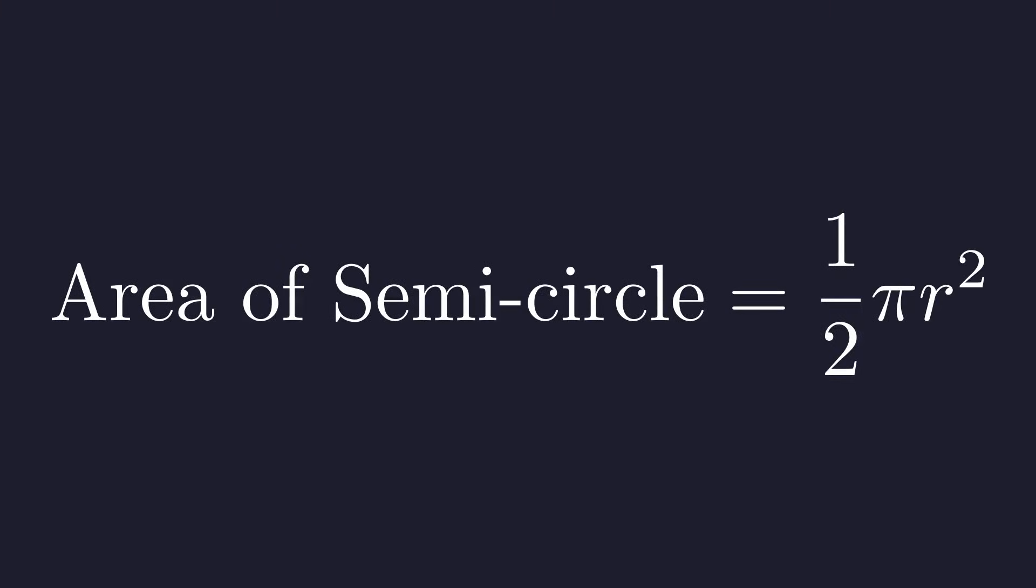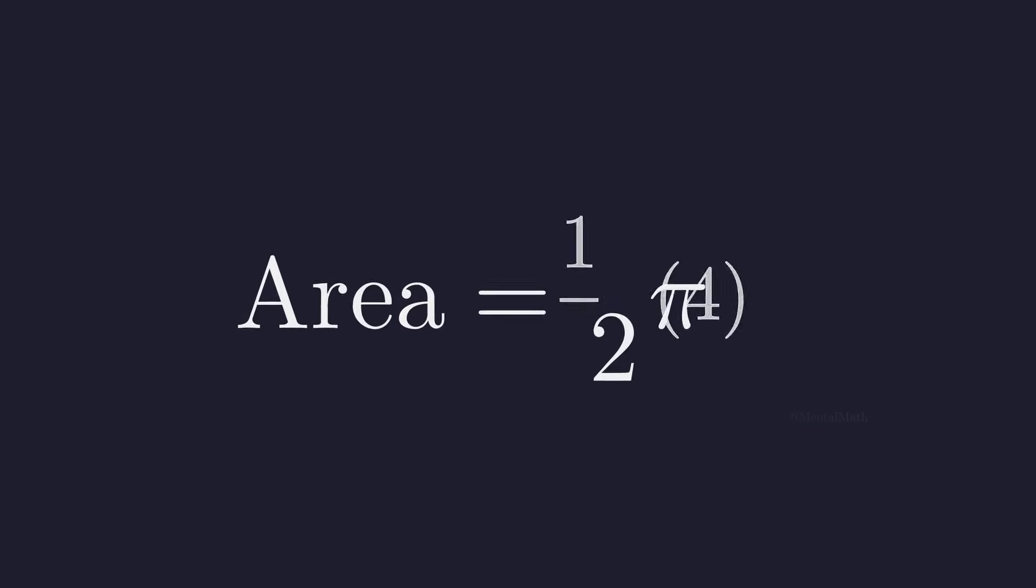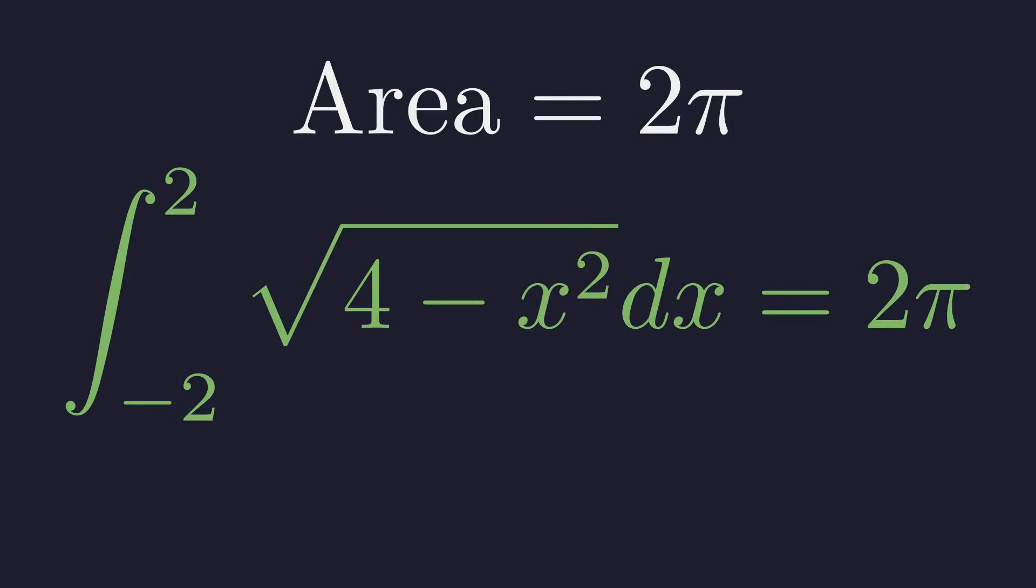The area of a semicircle is one half π r squared. Our radius r is two. Plugging in two for r: two squared is four, and one half times four gives us two π. So this integral evaluates to two π.